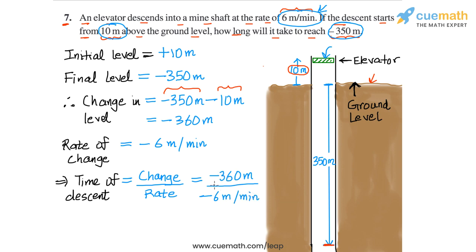And how much is this quotient? Both dividend and divisor are negative, so the quotient will be positive. And 360 by 6 is simply equal to 60. The unit will be minutes. So we will get this quotient as 60 minutes, which we can write as 1 hour. So the time of descent is 1 hour, and 1 hour therefore is the answer for question number 7.